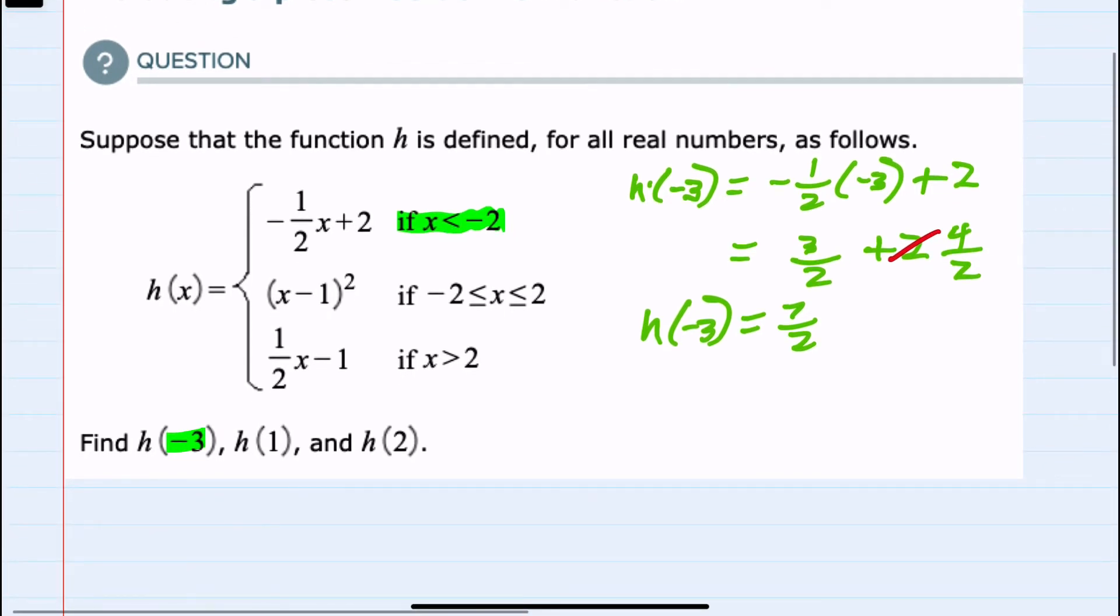Moving on to h of 1. 1 is between negative 2 and 2, so that's the second piece of our piecewise defined function. So when we plug in for h of 1, we're going to use that second definition.